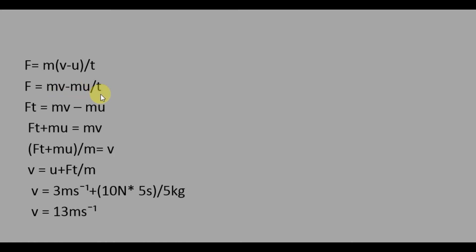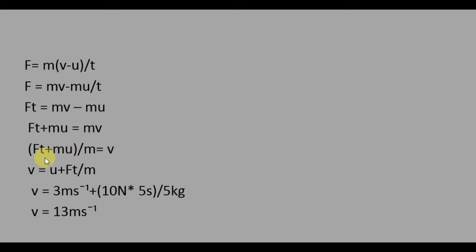Then multiply T with F: FT = MV − MU. Rearrange this equation: FT + MU = MV. We want the value of V, so the final velocity V = (FT + MU) / M. Or, V can be written as V = U + FT / M.